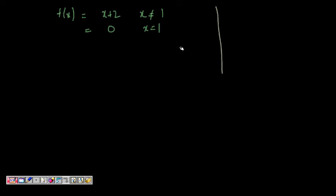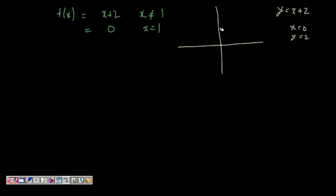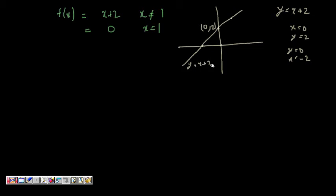We will now plot this function. For y = x + 2: when x = 0, y = 2, so the point (0, 2) is on the line; when y = 0, x = −2. So this is the line y = x + 2. However, at x = 1, the function value is 0 — not the line value of 3 — so there is a hole at x = 1.